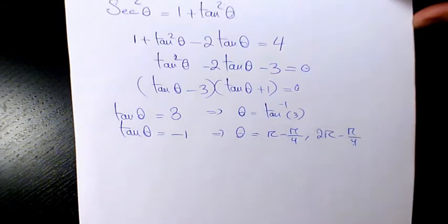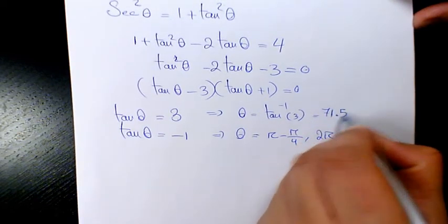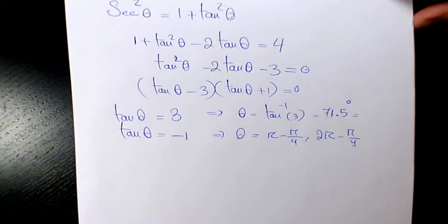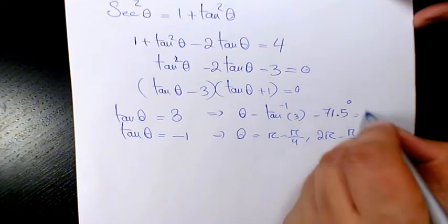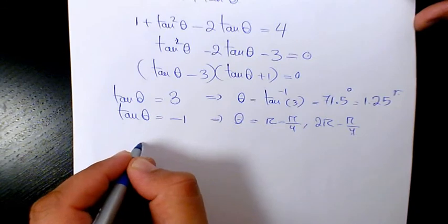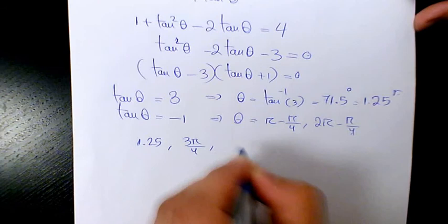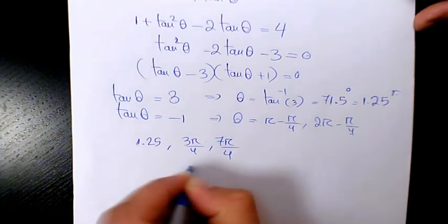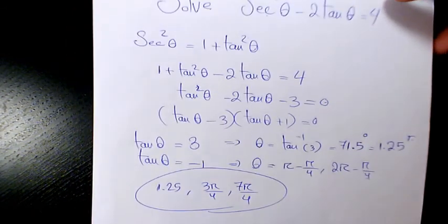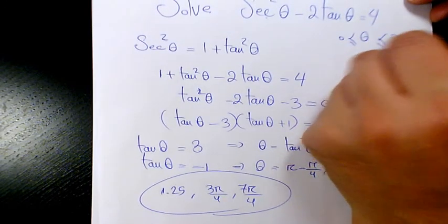So basically I can find out the tan⁻¹ of 3. It is going to be 71.5 degrees or 1.25 radians. And here we have 1.25 radians, 3π/4, and 7π/4. This is going to be the three answers when we are looking for θ between 0 and 2π.